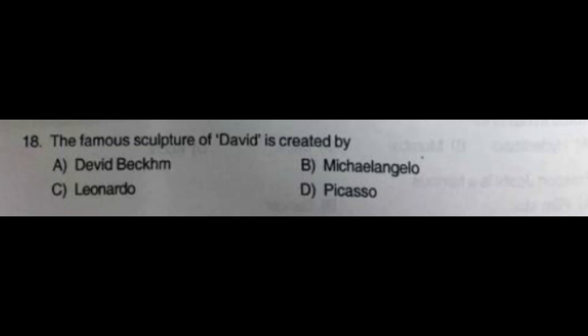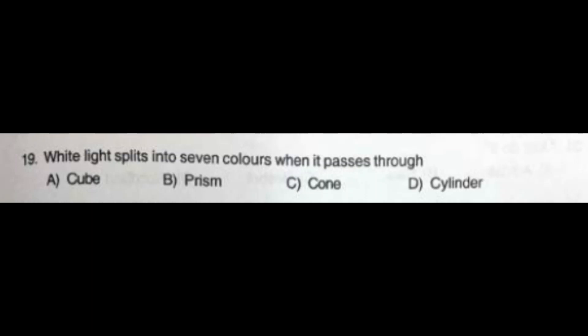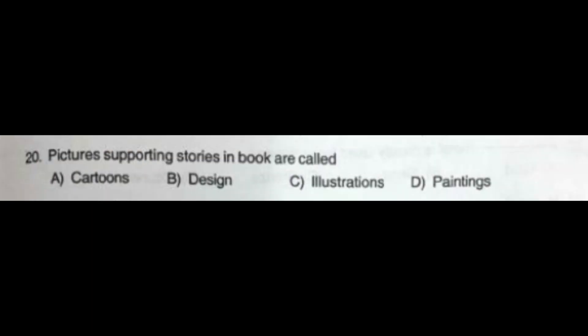Question number 19: White light splits into seven colors when it passes through — option A: Cube, option B: Prism, option C: Cone, option D: Cylinder. The correct answer is option B: Prism. Question number 20: Pictures supporting stories in books are called — option A: Cartoons, option B: Design, option C: Illustrations, option D: Paintings. The correct answer is option C: Illustrations.